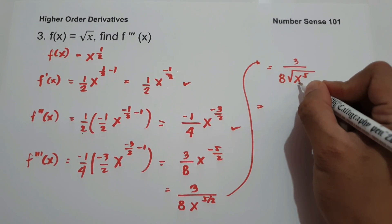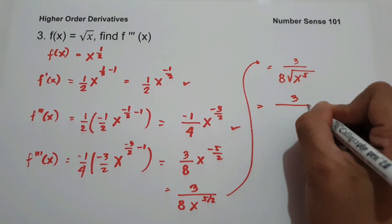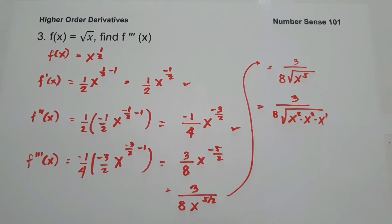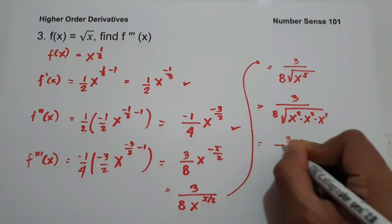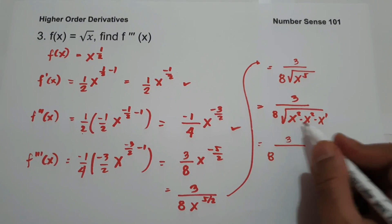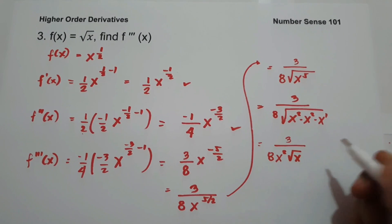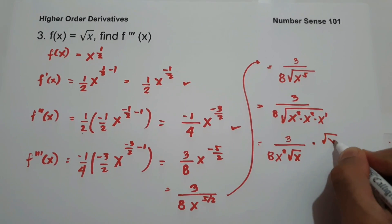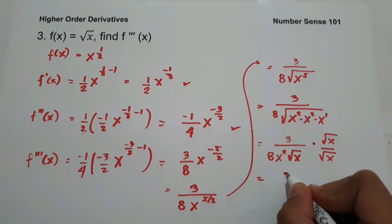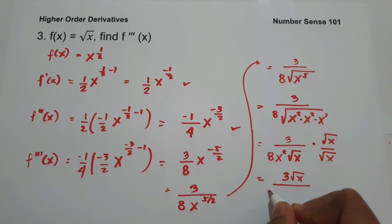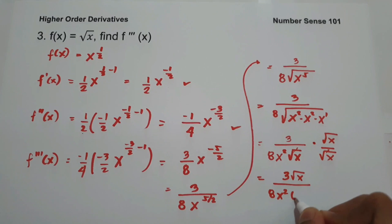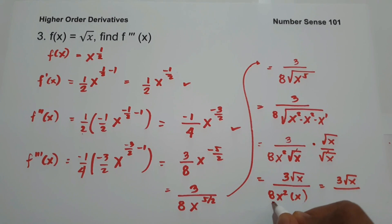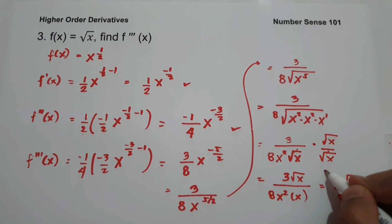Since the index is 2, we divide x raised to 5 by 2. So we have 3 over 8 times the square root of x squared times x squared times x, which totals x raised to 5. That gives us 3 over 8 times x squared times the square root of x. If you want to rationalize, multiply numerator and denominator by the square root of x, giving 3 square root of x over 8x squared times x, so the final answer is 3 square root of x over 8x cubed.